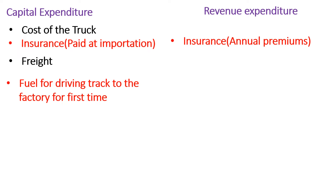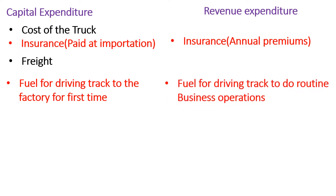Those inland transport costs included the fuel for the truck to get to my premises. However, that cost is different from the fuel I will buy for the truck to do its normal operations — distributing goods across the country. The fuel I buy to enable the truck to distribute goods is revenue expenditure, because it is an expenditure that helps me generate money. It's different from the fuel bought to transport the truck from the port to my business for the first time, which is capital expenditure.